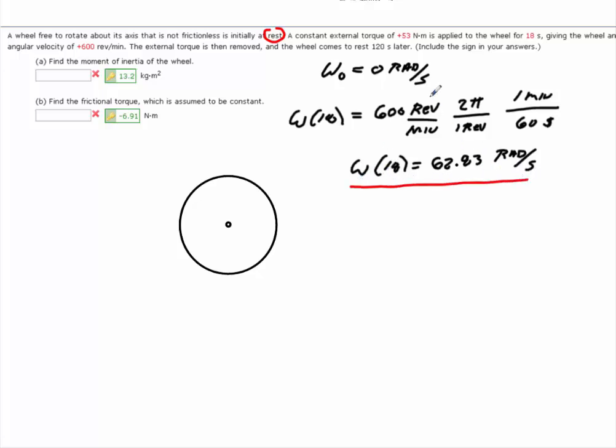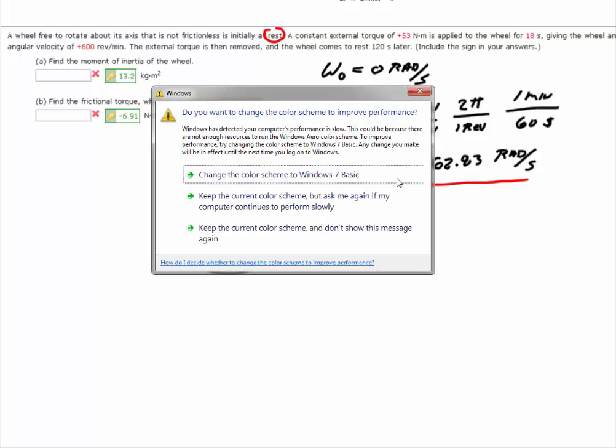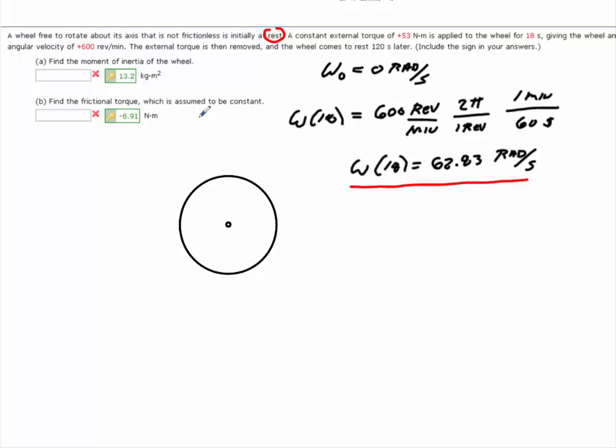Okay, now you know here that the wheel comes to rest. Now, if the wheel is coming to rest and you have this much angular velocity at 62.83, there must be some type of torque being applied to this.